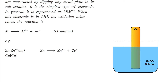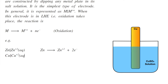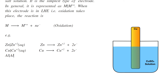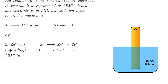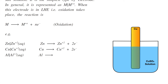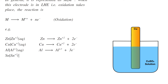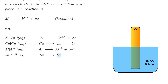Copper in contact with Cu²⁺ ions in aqueous solution: Cu → Cu²⁺ + 2e⁻. Aluminium in contact with Al³⁺ ions in aqueous medium: Al → Al³⁺ + 3e⁻. Similarly, tin in contact with Sn²⁺ ions in aqueous solution: Sn → Sn²⁺ + 2e⁻.